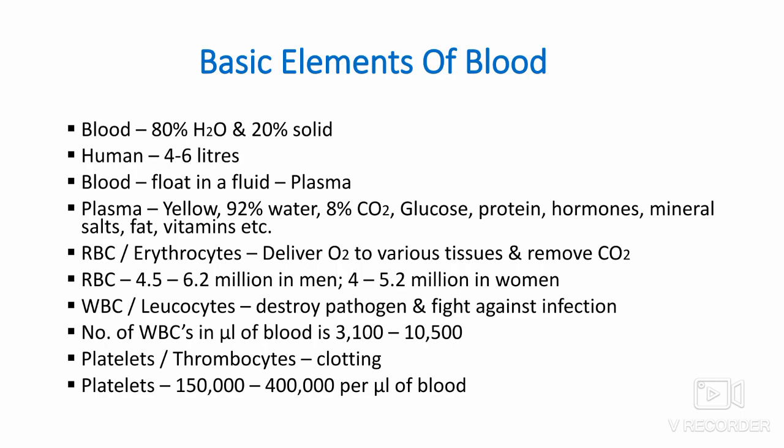As we know, blood is conducted through blood vessels, that is arteries and veins. Blood is prevented from clotting in blood vessels by the smoothness and finely tuned balance of clotting factors. Interestingly, there should be 150,000 to 400,000 platelets per microliter of blood.